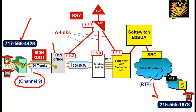Now that the end office knows this information, it must make an autonomous decision based on this information. The decision that it makes is part of its routing table known as the dial plan. It has its own dial plan.